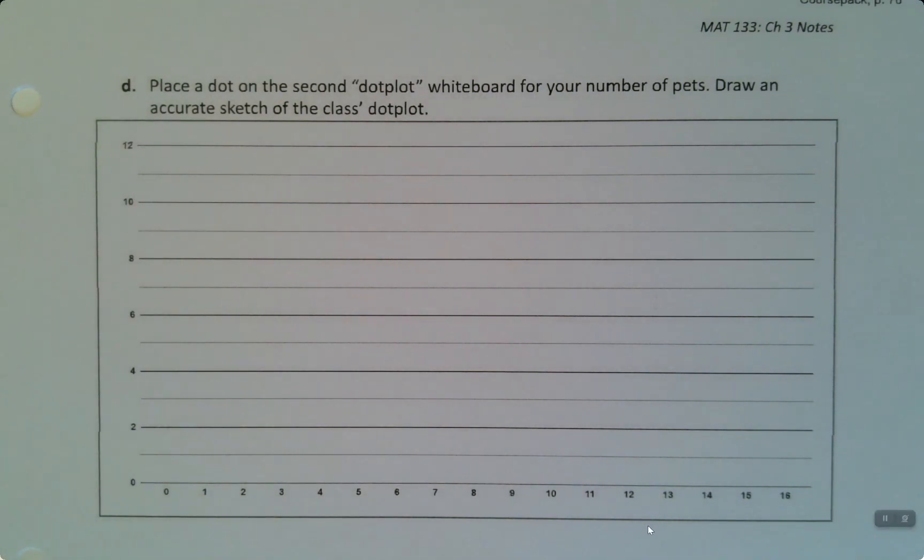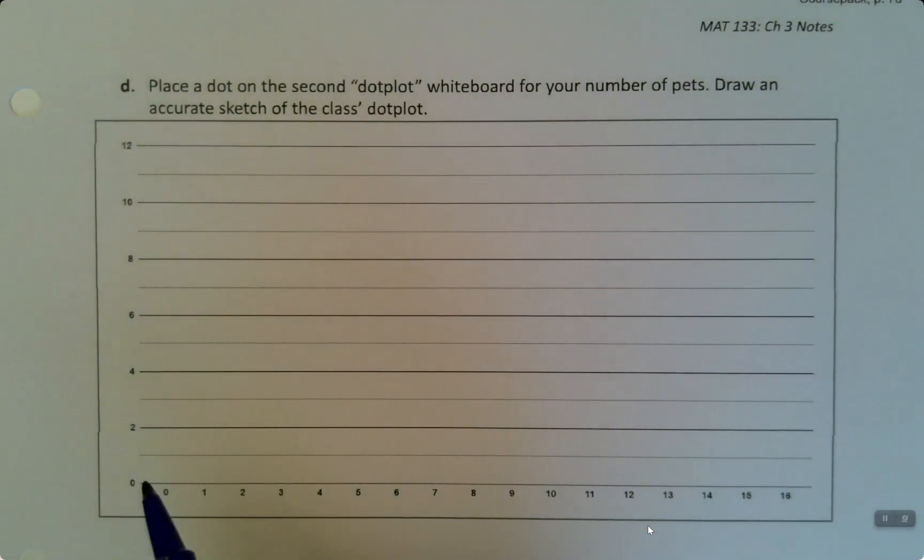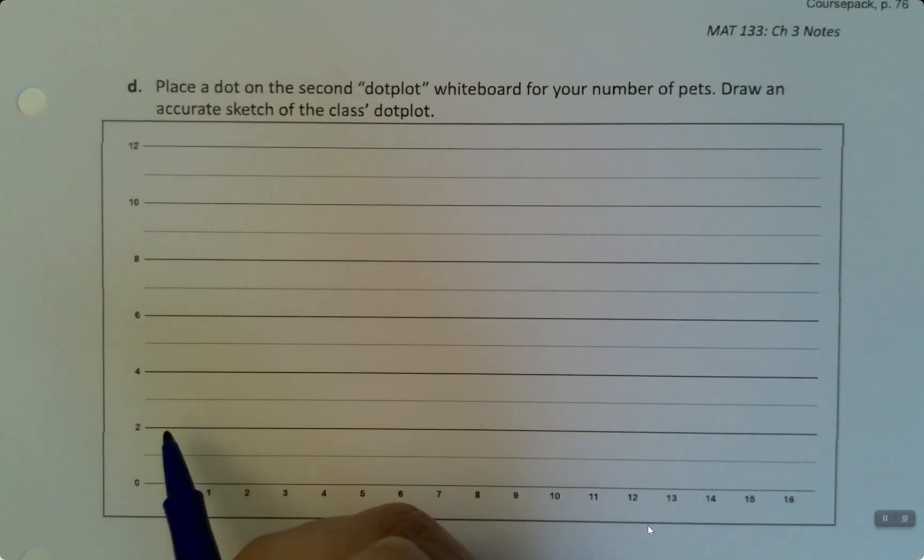So it's all well and good to be able to find the values of the mean, median, and mode, but what do they mean visually? We want kind of a sense of that about our data set. So what we're going to do is build a dot plot here. Now remember, a dot plot is a plot where each individual shows up as a single dot.